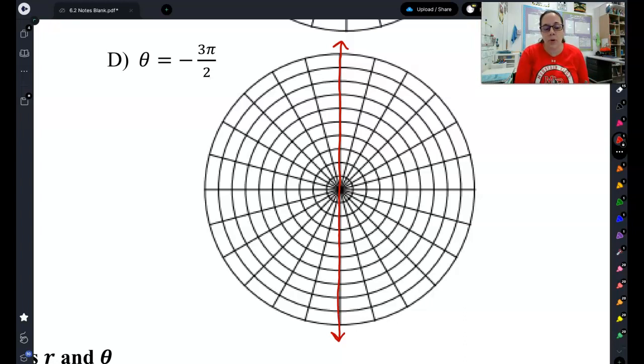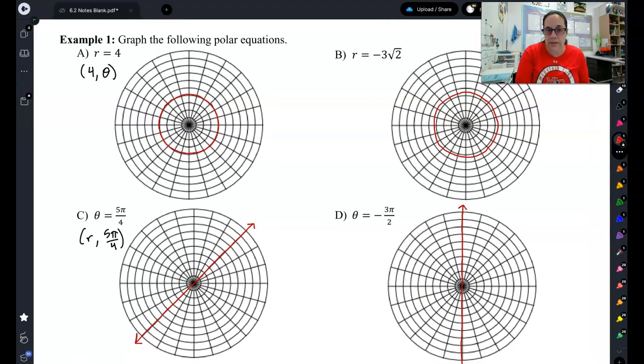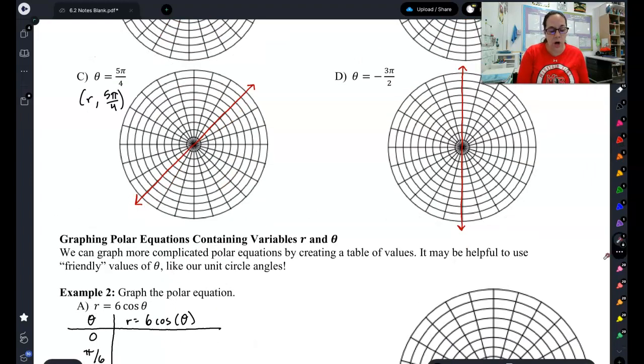So that is some pretty simple graphing, where we just graphed a couple examples of only r equals and only theta equals. For the rest of this lesson, we're going to get into some more complicated graphing, like r equals 6 cosine of theta. For the rest of this lesson, you will be using a calculator and a t-table to graph these things. So that is all I'm going to say for this video. Grab a calculator, and I'll meet with you in the next video to start graphing some more complicated functions. I'll see you in the next video.